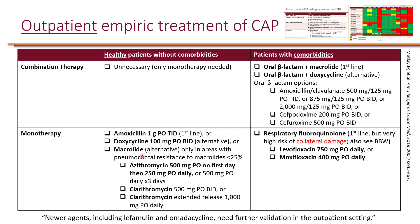With macrolides, it is considered alternative because we are seeing an increased rate of pneumococcal resistance. If you know that in your local area the rate of resistance is less than 25%, you can actually use azithromycin monotherapy. In our area at Loma Linda University Medical Center, the rate of macrolide resistance in Streptococcus pneumoniae is actually more than 30%. For those patients who have comorbidities, because they are at increased risk of having drug-resistant strep pneumo, you don't want to use a single agent, so we use combination therapy for good coverage.